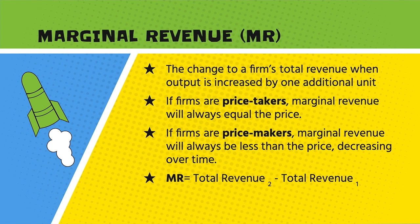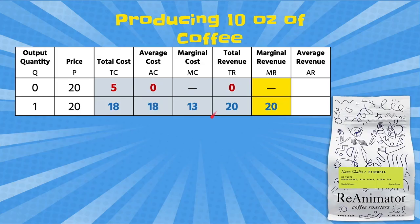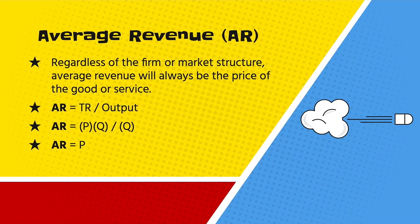We'll get into more of that as we graph and study specific market structures. Marginal revenue is the additional revenue gained from increased quantity output. Going from zero to one unit of output with revenue going from zero to $20, marginal revenue equals total revenue at current output minus total revenue at previous output — 20 minus 0 — giving us marginal revenue of $20. Average revenue is always going to equal price, because total revenue divided by quantity output equals price times quantity divided by quantity, which is just price.